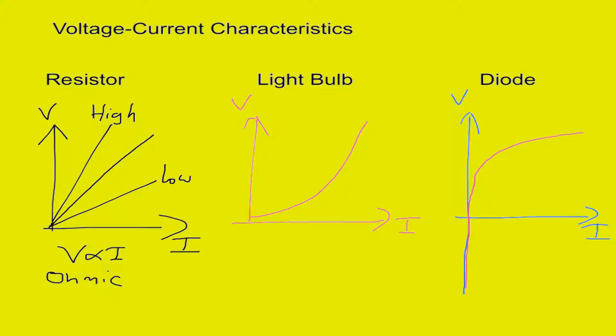until it reaches a point when it starts conducting a great deal and its resistance jumps down and it allows much more current through after a certain point.